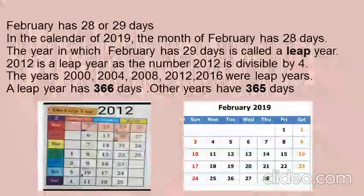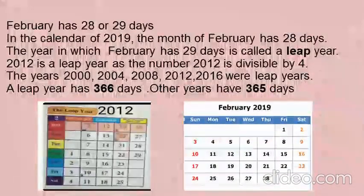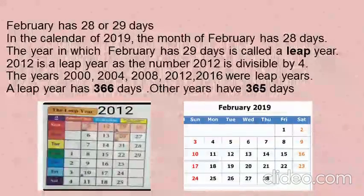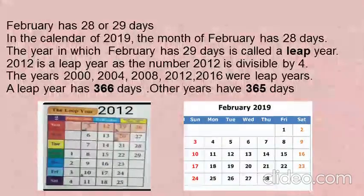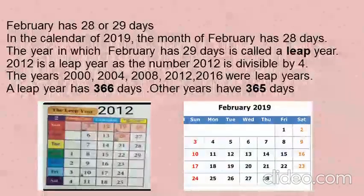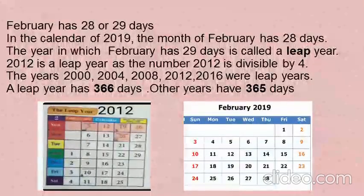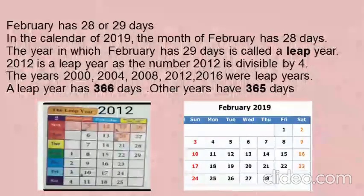February has 28 or 29 days. In the calendar of 2019, February has 28 days. The year in which February has 29 days is called a leap year. 2012 is a leap year as the number 2012 is divisible by 4. The years 2000, 2004, 2008, 2012, and 2016 were leap years. A leap year has 366 days; other years have 365 days.